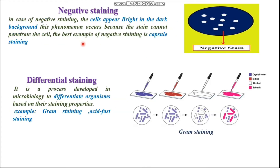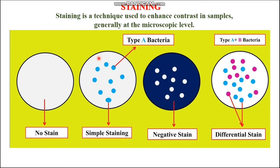Now let us discuss negative staining in comparison with simple staining. In simple staining, the bacterial cells are darker in color compared to the background. But in negative staining, the bacterial cells are lighter in color compared to the background. This is the key difference between simple staining and negative staining.